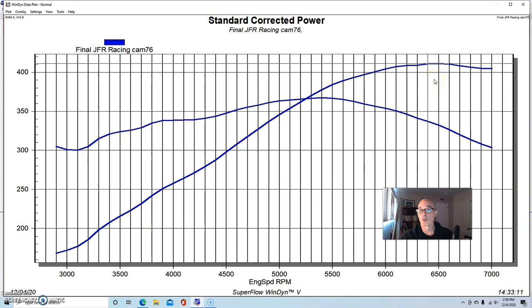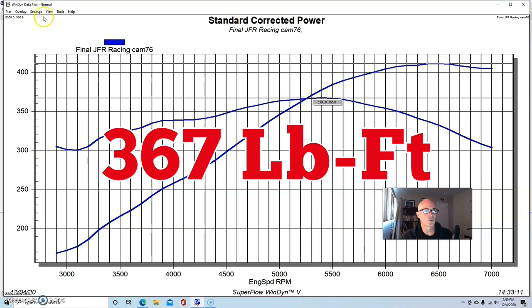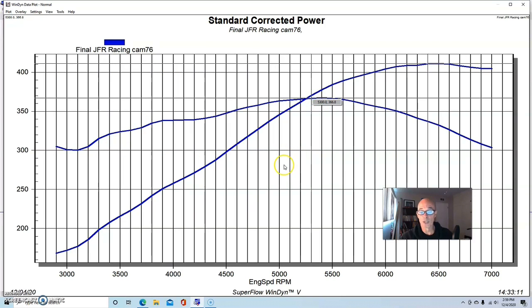This thing was also set up with a set of Snake Eater Performance 1500cc injectors. We ran this thing on E85. Before doing that we ran it naturally aspirated. This was a 4.8 liter but it did have a JE forged piston with a small dome, so it was slightly higher compression ratio.